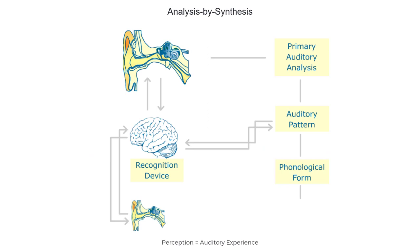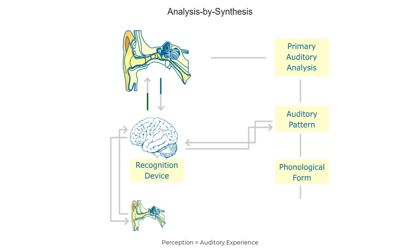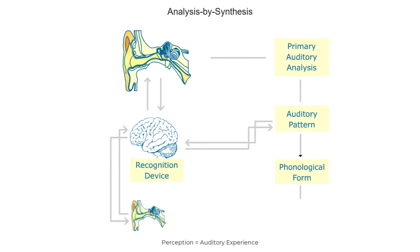The whole process looks like this. First, the ear amplifies the incoming signal and transmits it to the auditory nerve. Then, the signal is filtered and non-speech components are removed, and auditory patterns, such as formant frequencies, are extracted.